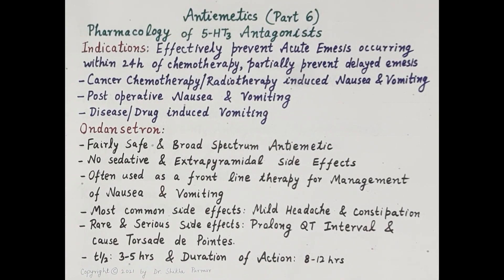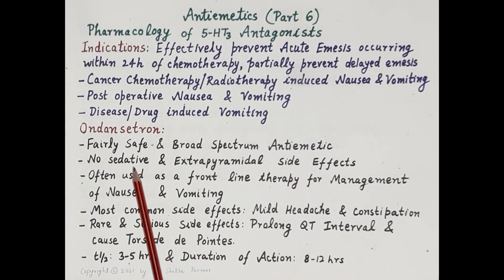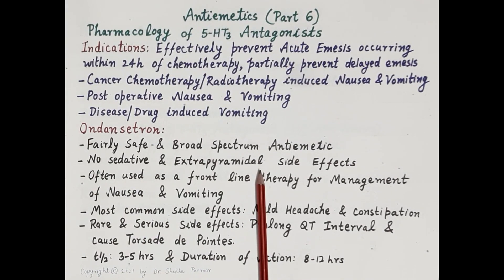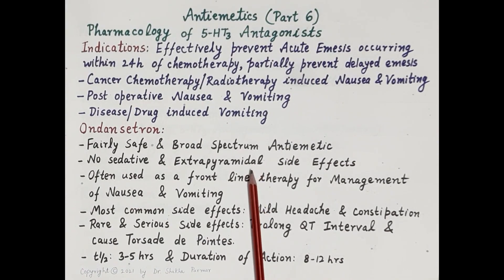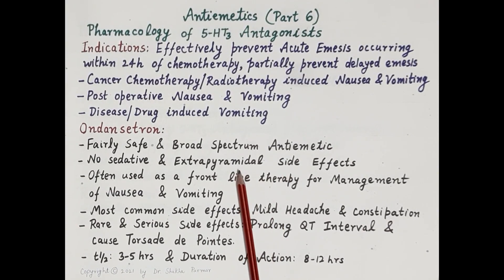Now let's look at the characteristic features of 5-HT3 antagonists. The first drug is ondansetron. It is a fairly safe and broad-spectrum antiemetic. Unlike antihistaminics, it does not produce sedation, and unlike D2 receptor antagonists such as neuroleptic agents or prokinetic agents like metoclopramide, these drugs do not exhibit extrapyramidal side effects. Thus, ondansetron is often used as first-line therapy for the management of nausea and vomiting.